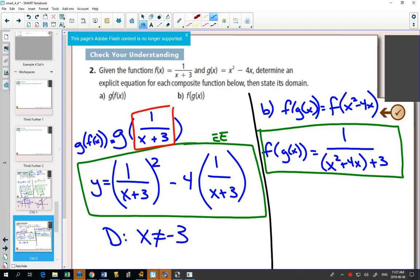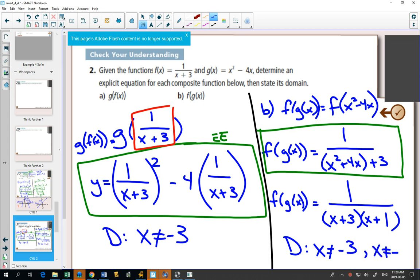When finding the domain of that equation, are there any values that make us divide by 0? Well, we might want to factor the bottom. The bottom factors nicely to x plus 3, x plus 1. Are there any non-permissible values? Yes. So our domain, x can't equal negative 3 and x can't equal negative 1.